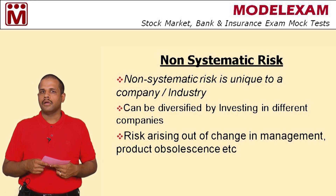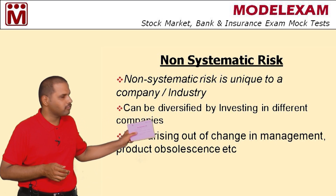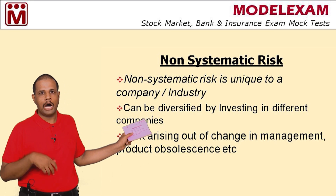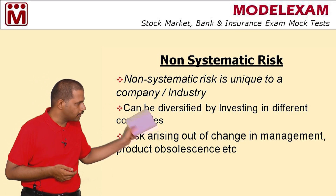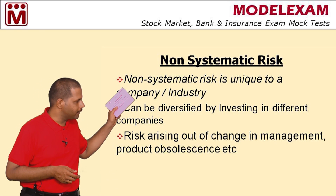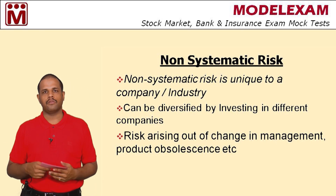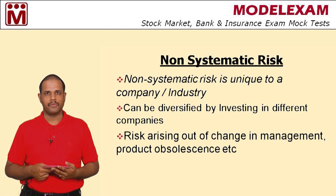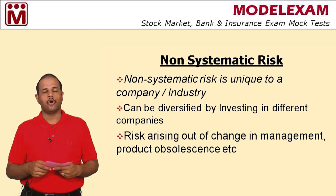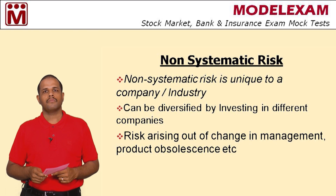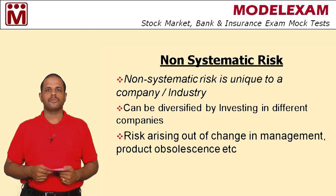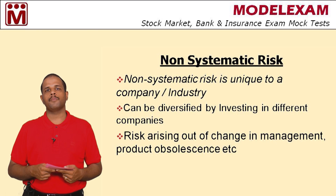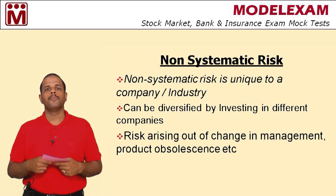Non-systematic risk can be diversified and reduced. How? By diversification — instead of investing in a particular company or a particular stock, you can spread your investments across different industries and different companies. In that way, you can reduce non-systematic risk. These two risks put together — systematic risk and non-systematic risk — is what we call the total risk of a portfolio.